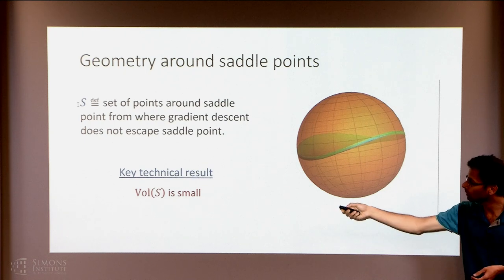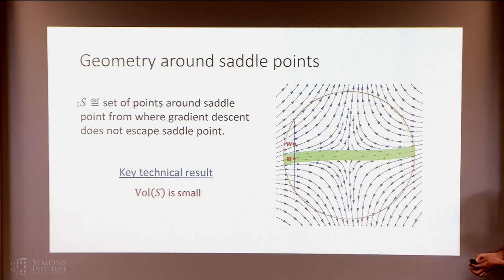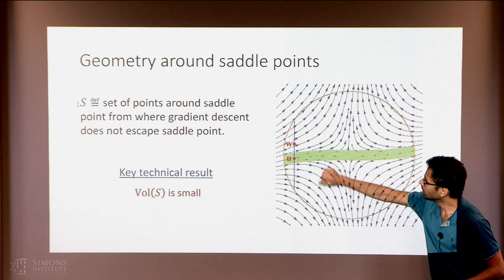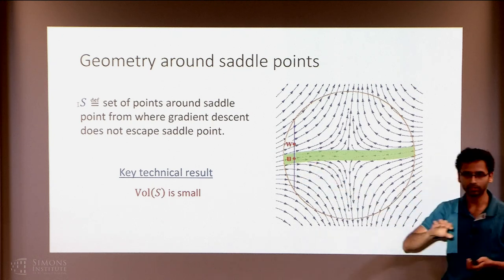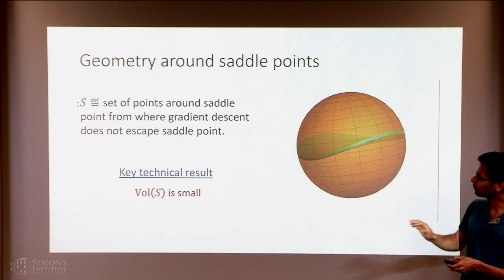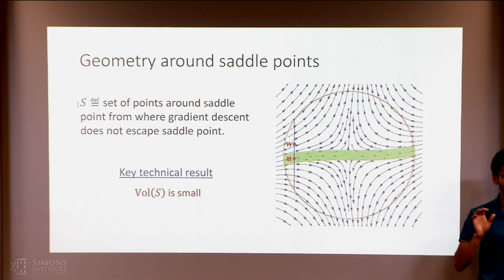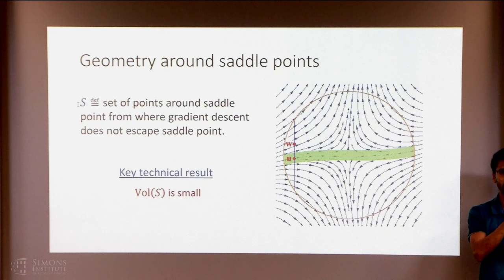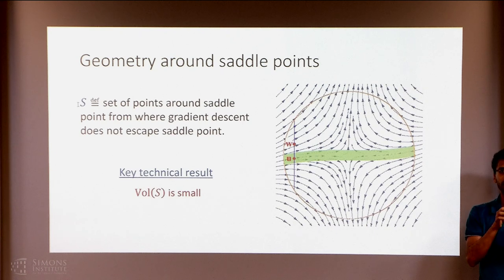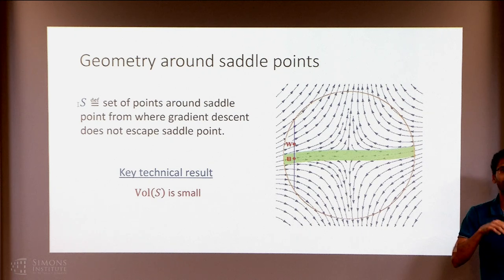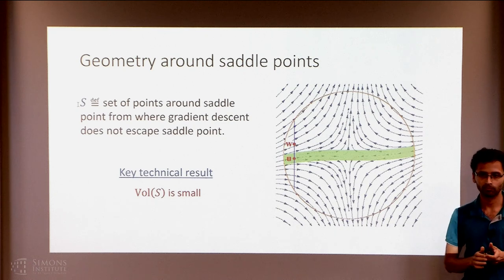How do we show the volume of S is small? Consider a cross-sectional view. Say u is a point in S from where gradient descent does not escape. Consider the point w obtained by adding the negative eigendirection to u. We show that if u does not escape, then w will escape. So for every point in S, there are many other points inside this ball which actually escape. This essentially gives us the small volume result — that is the key technical ingredient.